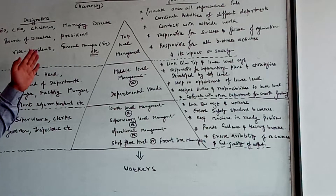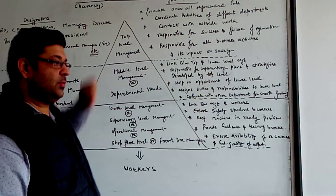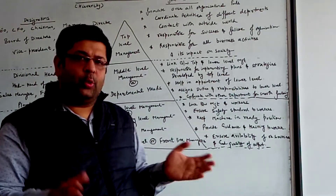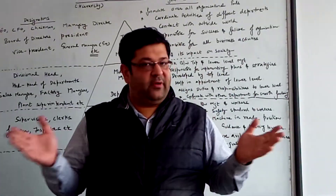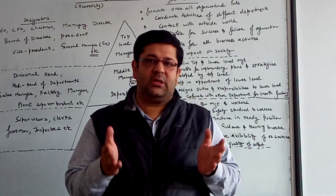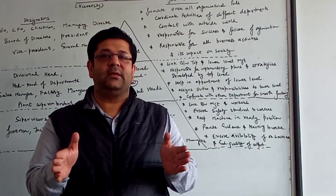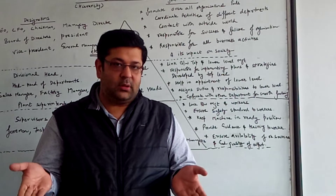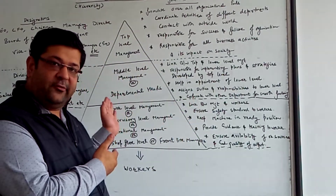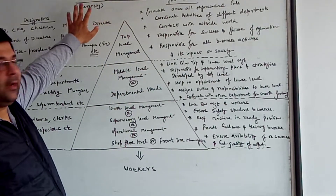Today in this video we will study about different levels of management. Levels means hierarchy. We know if we try to control everything we end up doing nothing. An individual cannot handle all situations by themselves — they need to delegate some work and share the responsibility. So for handling the work, there is a level of management, also called hierarchy.